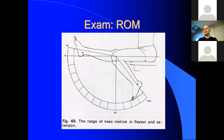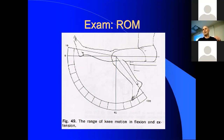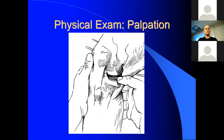After swelling assessment, move on to range of motion. Average knee range of motion is about 130 degrees of flexion out to full extension, which is zero. If someone can't fully extend, document it as, for example, 5 to 120. If they're 10 degrees short, it's 10 to 120. Few people can hyperextend — if they can, call it minus 5 or minus 10 to whatever flexion they have.